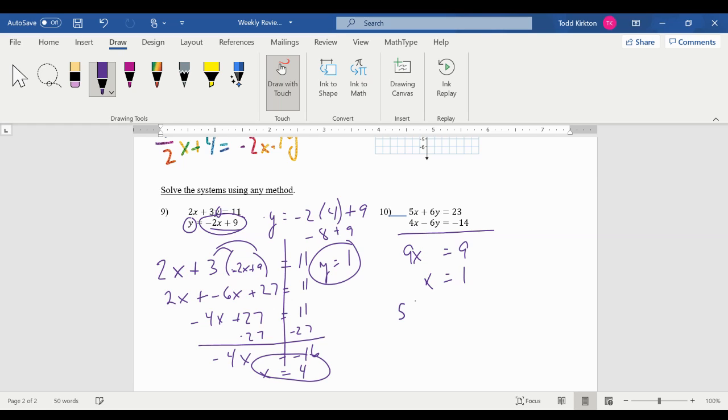Second step would be to substitute your answer from your first step into one of the two equations. So I'm putting in 1 for x. Now I can subtract 5. 6y equals 18. So the solution here is 1, 3.